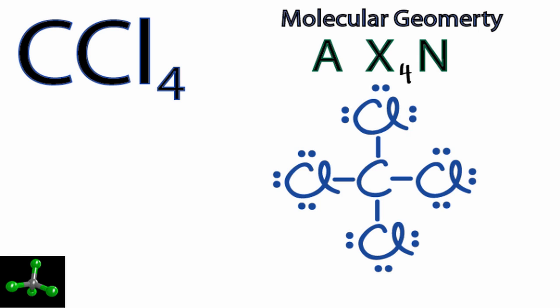And then N, that's the number of non-bonding electrons on the central carbon. All of the electrons are involved in chemical bonds, so we can just ignore N. That gives us an AX4 notation.